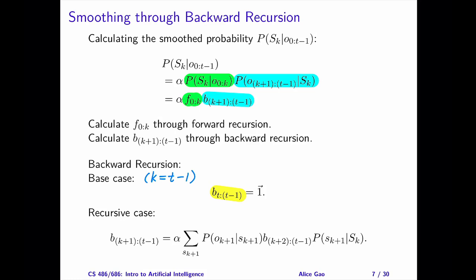If k is an integer from 0 to t minus 2, we have the recursive case. We are given the message B sub k plus 2 to t minus 1. We want to calculate the message B sub k plus 1 to t minus 1. Note that we are going backward in time from day k plus 2 to day k plus 1.